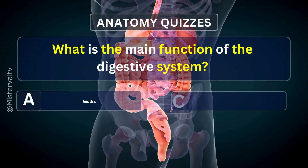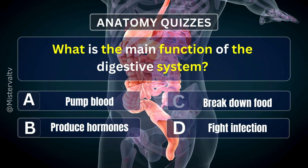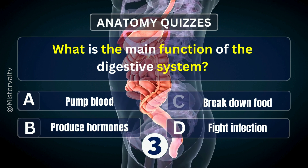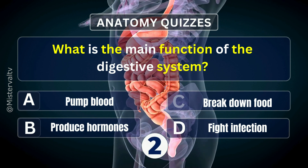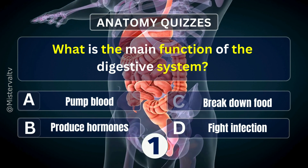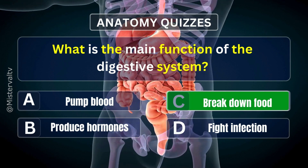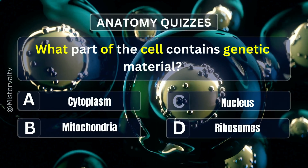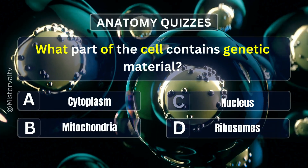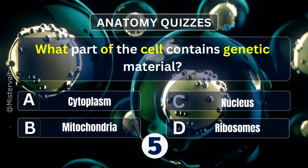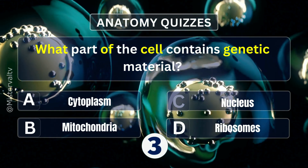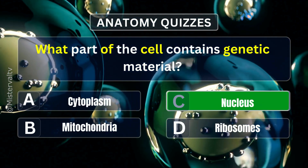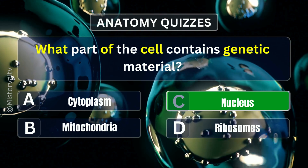What is the main function of the digestive system? Answer. C. Break down food. What part of the cell contains genetic material? Answer. C. Nucleus.